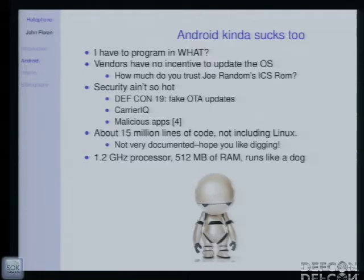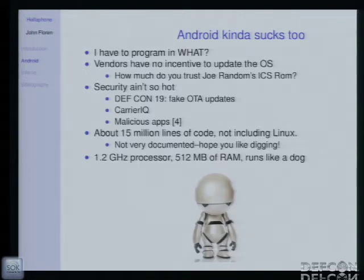Because we're paranoid people — how much do you really trust that random person on the XDA forums who says, 'Here's a ROM I just cooked up'? He probably didn't put Carrier IQ on there and is probably more trustworthy than AT&T, but who knows what's in there? Android, like the other devices, has some security problems. I've seen more issues with Android — talks here, stuff in the news — than with other phone OSes. Last year there was a talk about fake over-the-air updates being pushed via a rogue cell tower somebody had in their backpack. Android was also affected by Carrier IQ, and there's been a plethora of malicious apps.